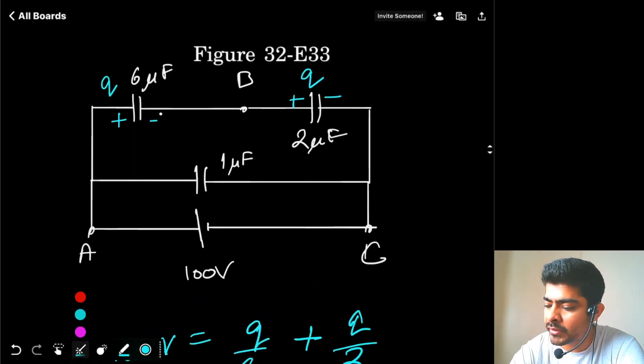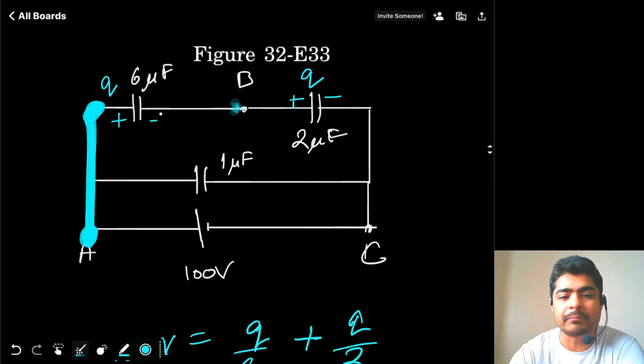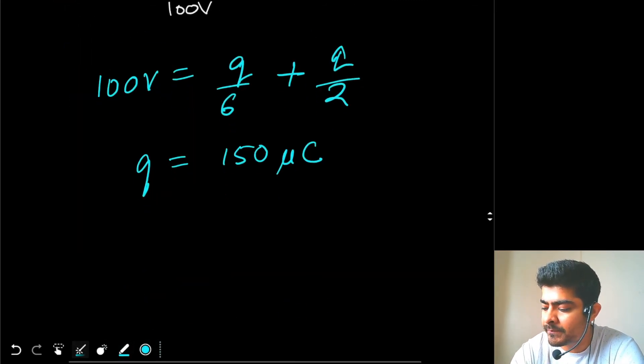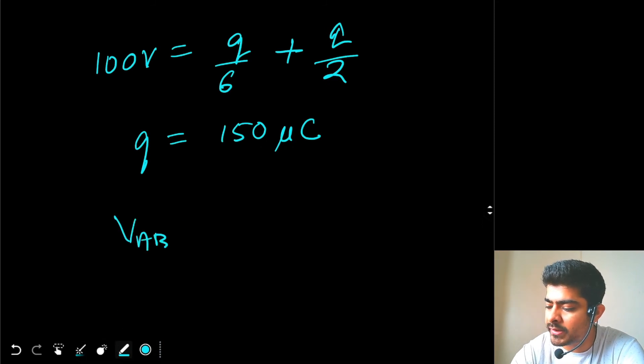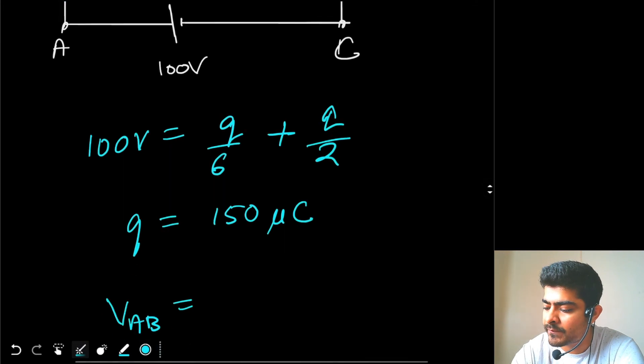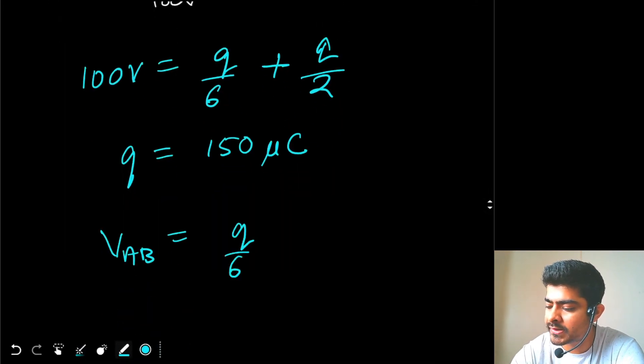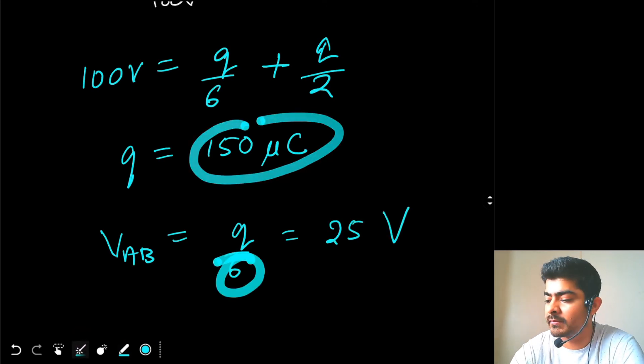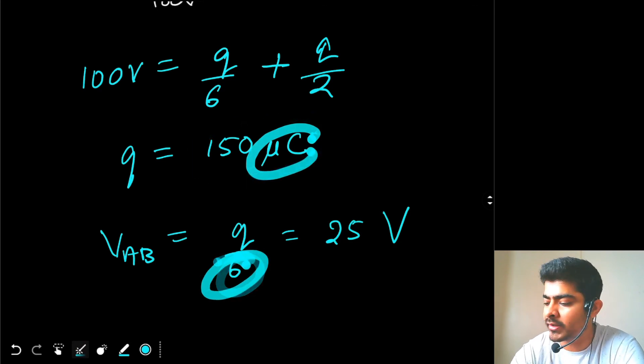Now they are asking the potential difference between A and B. So this point and this point have same potential. So potential difference here will be equal to potential difference between A and B. So I can write down V A and B will be simple q by 6. So that is equal to 25V. You put q equal to 150 microcoulombs and this is 6 microfarad, you obtain 25V.